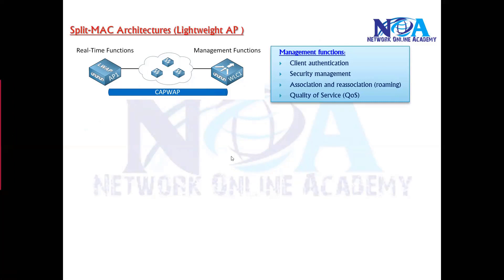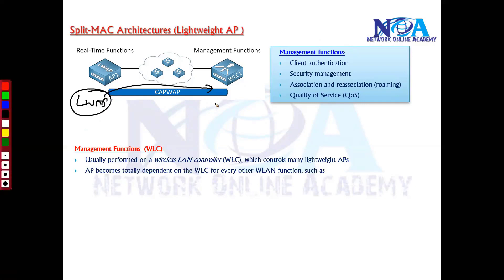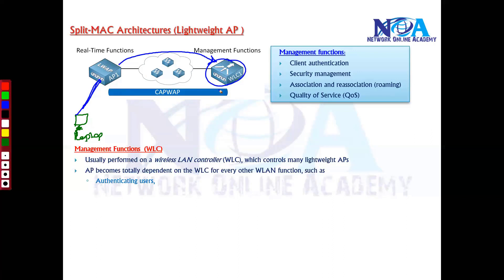The WLC controls multiple lightweight access points. When using lightweight access points, you must have a WLC because they only perform real-time functions — all management functions are shifted to the WLC. Without a WLC, lightweight access points won't work. One basic function of the WLC is user authentication: when a wireless user connects to an access point, the access point forwards the request and the WLC performs the authentication process, based on local user accounts or external servers depending on the implementation.